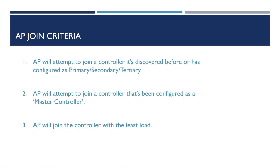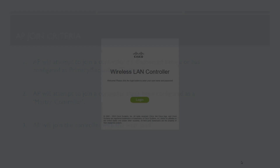Firstly, if the AP has joined a wireless controller it has discovered before, it will join that controller. If not, an AP can be configured with a primary, secondary, and tertiary controller within its configuration. If a discovered controller is in that configured list, it will attempt to join in the order of primary, secondary, then tertiary. If the AP doesn't find a controller matching those criteria, it will connect to a controller that has been configured as the master controller, as shown on the screen now.